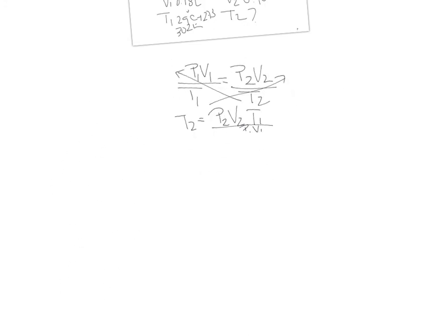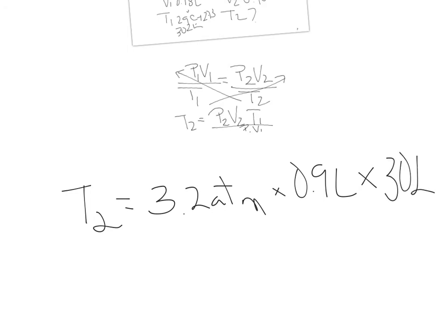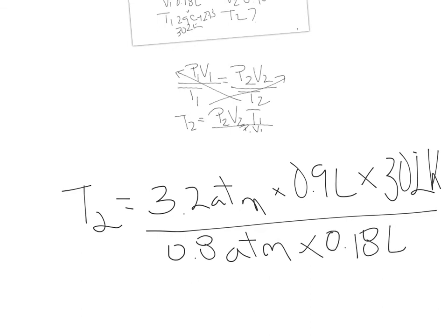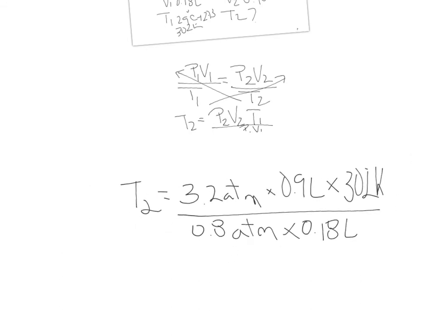So, we're going to solve for T2. P2 was 3.2 atm, V2 is 0.90 liters, T1 was 302 Kelvin. All this divided by P1, which was 0.88 atm, times V1, which was 0.18 liters. So, we do our calculations, and we end up with T2 equals to 604 Kelvin.